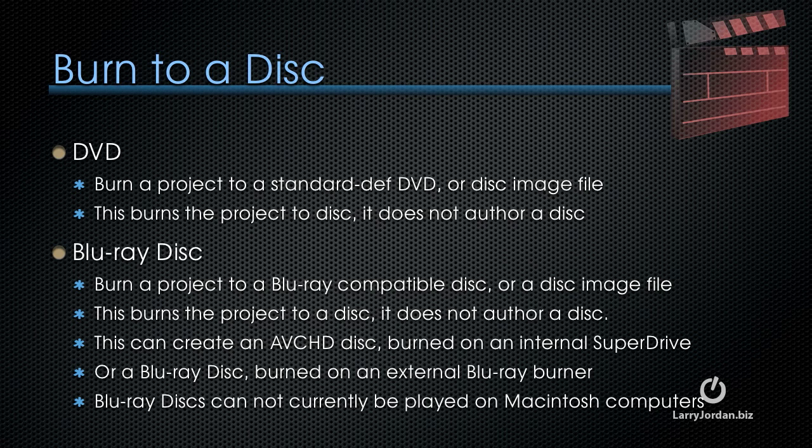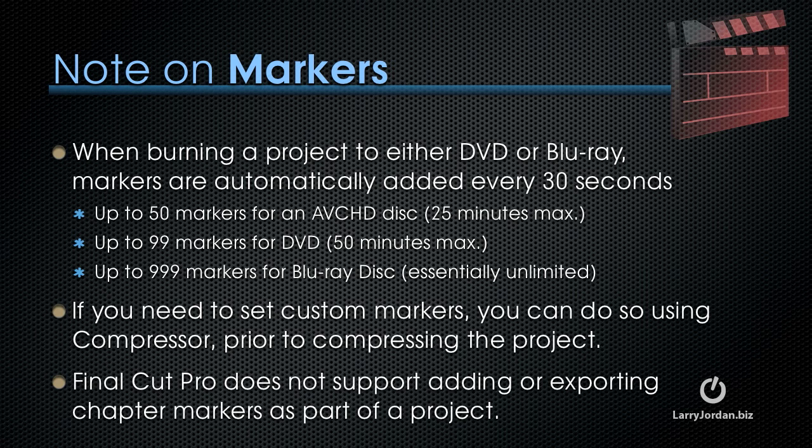When we create a Blu-ray disk, we are also burning a project to a Blu-ray-compatible disk or creating a disk image file. This burns the movie to a disk but doesn't author a Blu-ray title. There are two kinds of Blu-ray disks: an AVCHD disk, burned on an internal SuperDrive, or a Blu-ray disk burned on an external Blu-ray burner. Blu-ray disks cannot currently be played on Macintosh computers. When burning to either DVD or Blu-ray, markers are automatically added every 30 seconds — up to 50 markers for AVCHD (about 25 minutes), up to 99 for DVD (50-minute maximum), and up to 999 for Blu-ray, which is essentially unlimited. Custom markers can be set using Compressor prior to compressing the project.